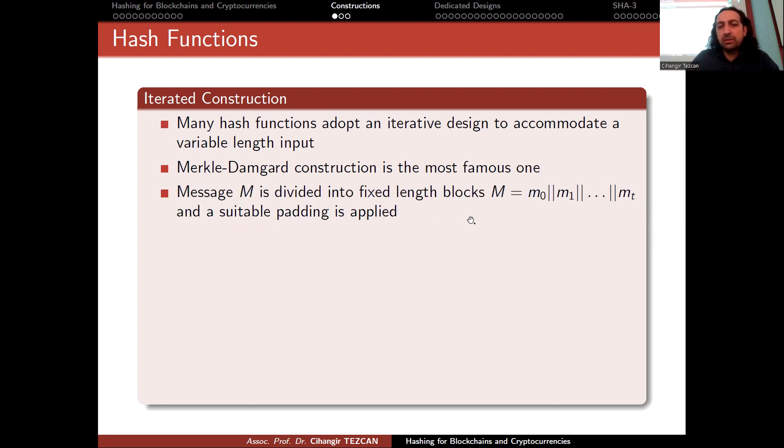M is divided as the concatenation of many parts—in this case it is divided into t+1 parts—and you apply a suitable padding. Since it is a variable length, we don't want to have ambiguities, so this is why we perform a padding. Message blocks are compressed one after the other to produce h_i using a compression function f.